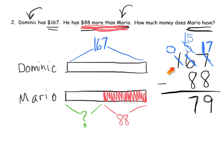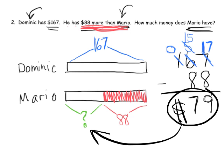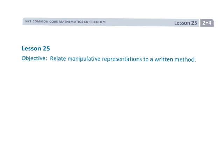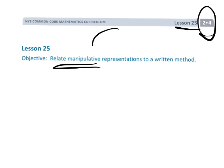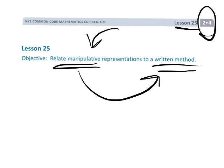We don't have to do anything in the hundreds column — zero hundreds take away zero hundreds, so we're done. The answer is $79, so Mario has $79. That wraps up Grade 2, Module 4, Lesson 25, where we're starting to give up the manipulative — using it on the side on the table, not recording it, just using it to support our transition to the standard algorithm.